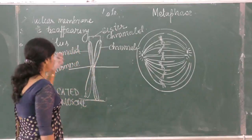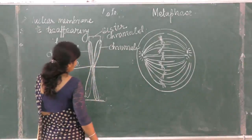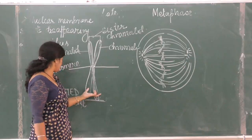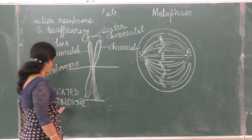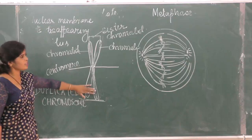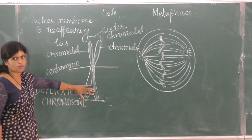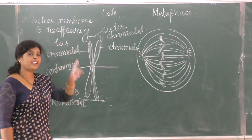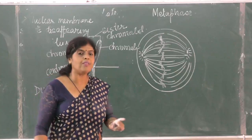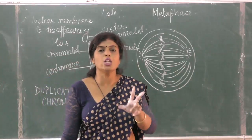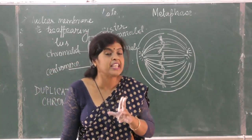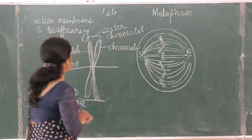A chromosome which is composed of two sister chromatids is known as a duplicated chromosome. A duplicated chromosome will always have two molecules of DNA — the replicated DNA.